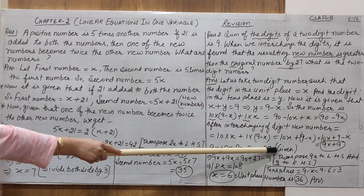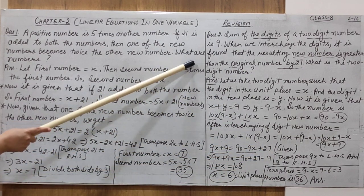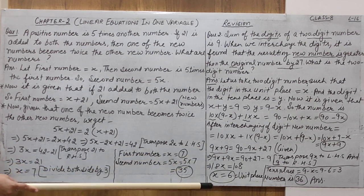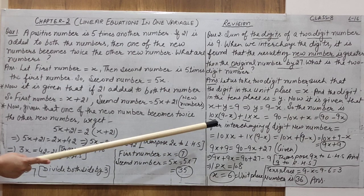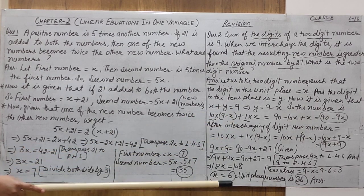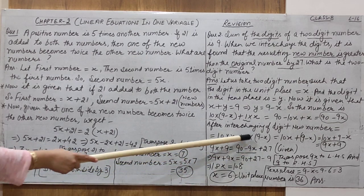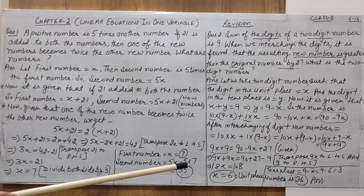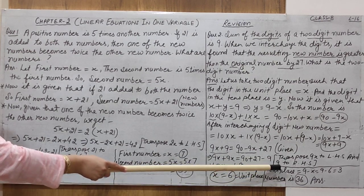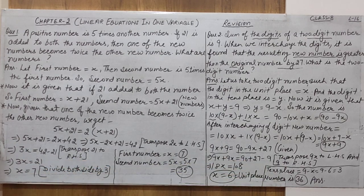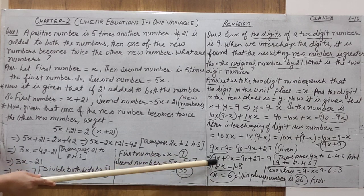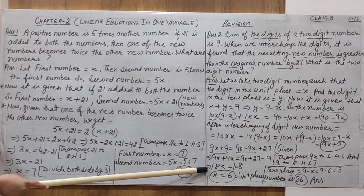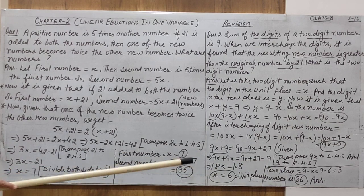Now solve the equation: transpose 9x from the right-hand side to the left-hand side, and 9 from the left to the right-hand side. Collecting variables on the left and constants on the right: 9x + 9x = 90 + 27 − 9, which gives 18x = 108.